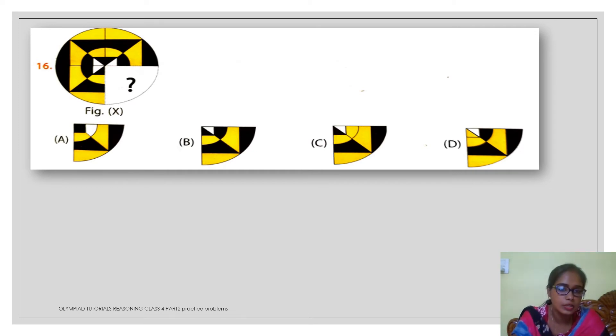Again, in this question, in a similar pattern, if you just observe which part is missing, you will see that the option B, it is going to fit over here. The missing part is option number B.